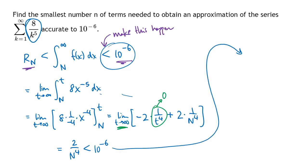So we multiply both sides by N to the 4th, that's going to give us 2 is less than 10 to the minus 6 times N to the 4th. Divide both sides by 10 to the minus 6. That's going to give us 2 million is less than N to the 4th. If I take the 4th root of both sides, that's going to give me N is greater than about 37.6.